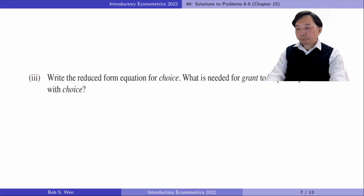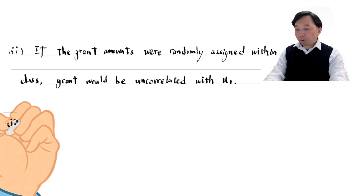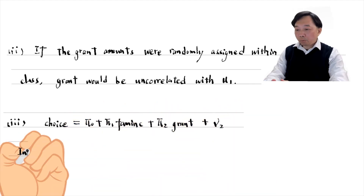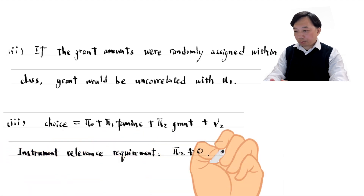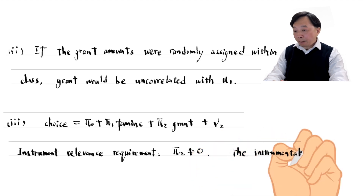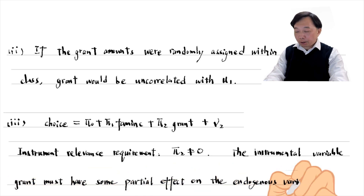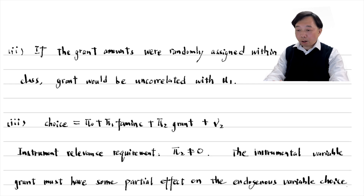In part 3, write the reduced form equation for choice. What is needed for grant to be partially correlated with choice? The reduced form equation for choice is as follows. The instrument relevance requirement is that pi 2 is not equal to 0. In other words, the instrumental variable grant must have some partial effect on the endogenous variable choice in the reduced form equation. To avoid a weak instrument, the rule of thumb is that the F-statistic for the significance of the excluded exogenous variable grant is above 10.